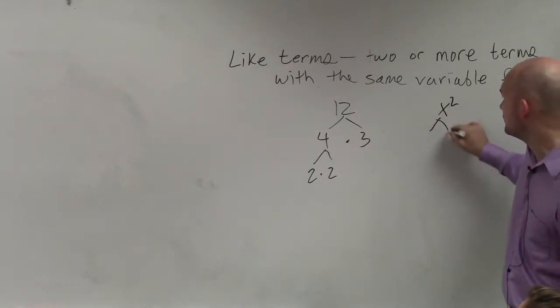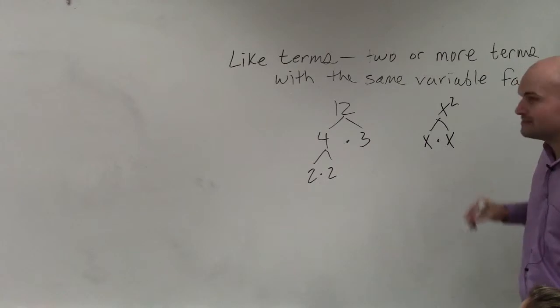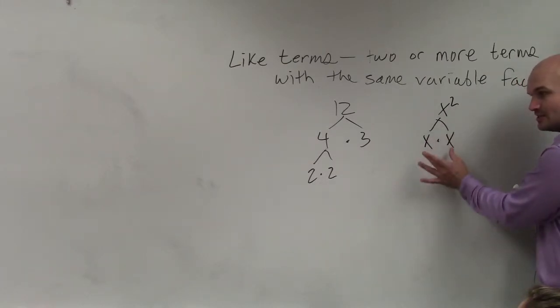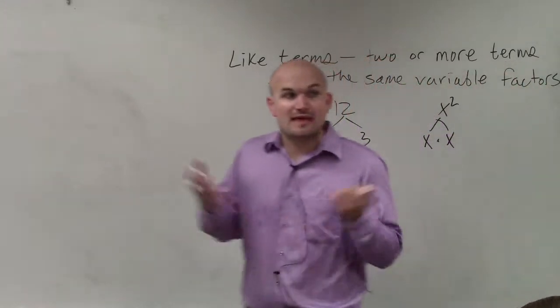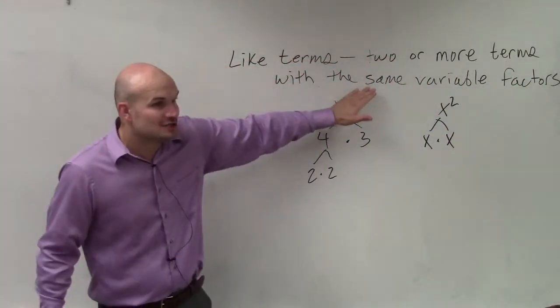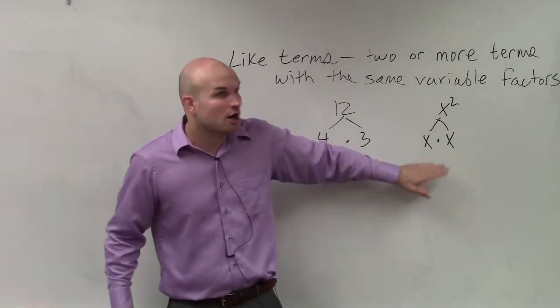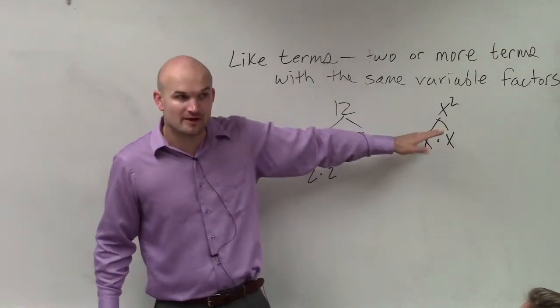But then we want to prime factor x squared. Well, x squared can be broken down into x times x. So the factors, the variable factors for this is going to be x times x, or x squared, right? So that means the only other like terms that I can combine this with are ones that have x squared as its variable factors.